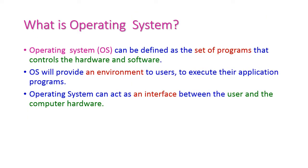First let us see what is an operating system, otherwise called as OS. OS contains a collection of programs which are used to control the hardware as well as software installed on the computer. Operating system is a set of programs which controls the hardware — meaning the physical components — and the software, which is nothing but the application software.